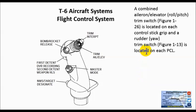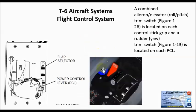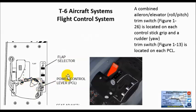A rudder yaw trim switch is located on the PCL, which I'll show in a moment. Here we have the rear cockpit with our aileron elevator, or roll pitch trim control, and our trim intercept control. Here on the power control lever, commonly referred to as the PCL, we have our rudder or yaw trim control. Here's the rocker switch located on the front of the PCL. I've installed a picture where you can see a very good top view of the power control lever, and you can see the trim switch here for rudder or yaw.